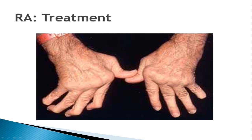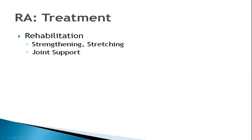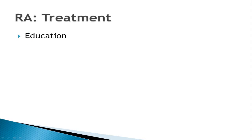In terms of treatment, many of you may have seen pictures of hands significantly damaged by rheumatoid arthritis. Our goal — and a very reasonable goal — is to prevent that from happening. At a basic level, rehabilitation is important: strengthening of muscles, stretching, and joint support are all potentially important components. Education is also important; we have a four-day rheumatoid arthritis education program in Edmonton available to all our patients, and there are internet resources available as well.